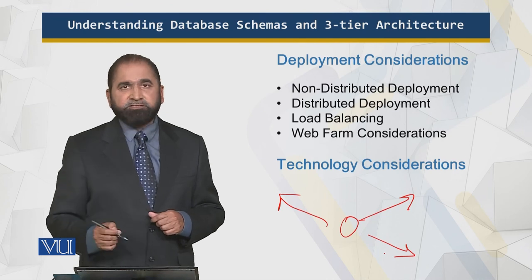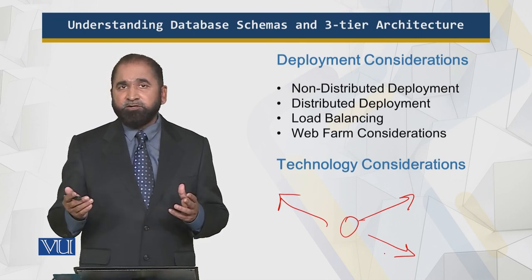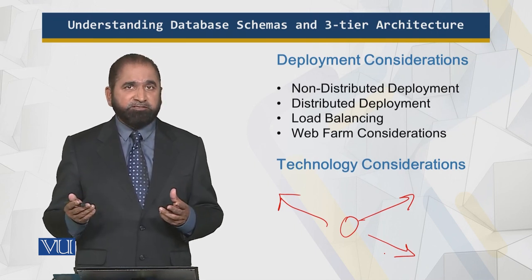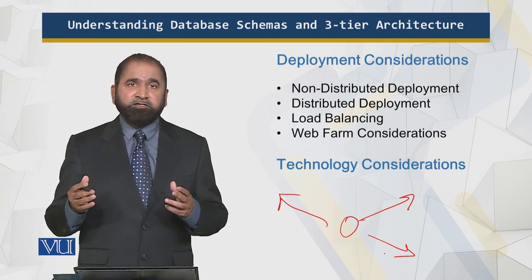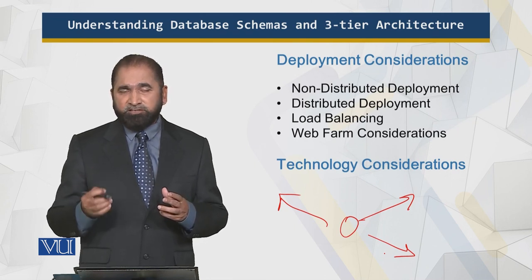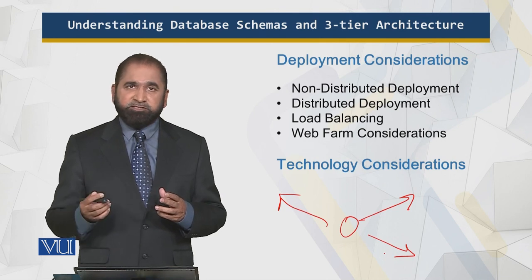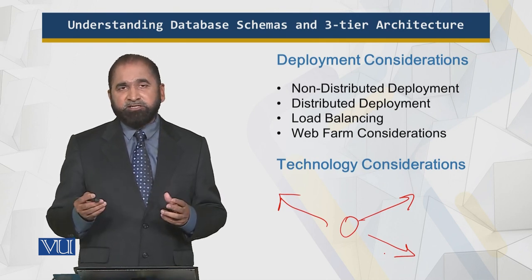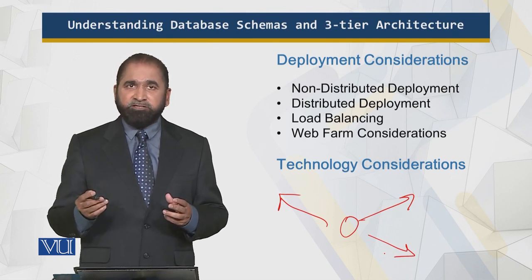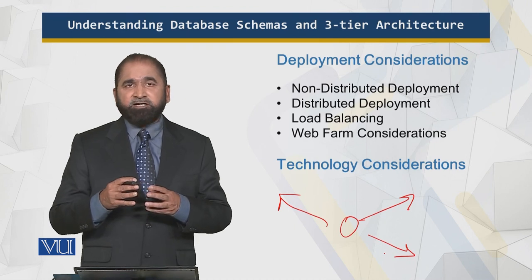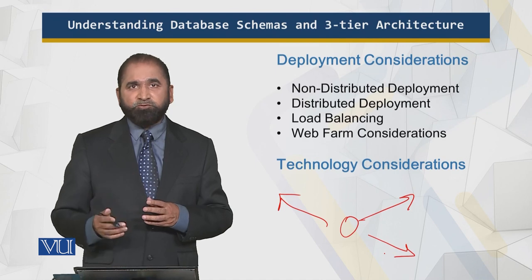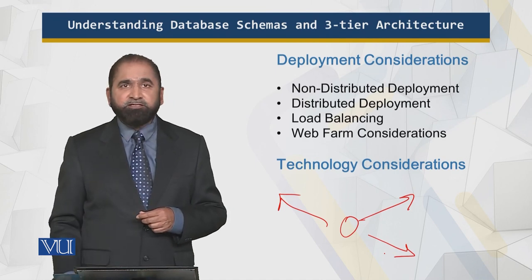Finally, there are technology considerations. There is an ecosystem of different organizations and products — for example, Microsoft products. When developing an application, we take into account all the aspects, technologies, services, programs, and applications provided by a certain company, so that they work together collectively with no issues and things run smoothly. This is what I will cover in this module.